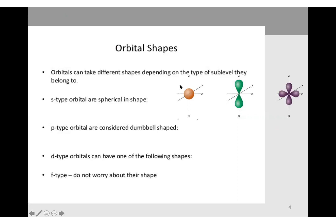These are the shapes of orbitals. Think about 3D space: the s orbital is spherical — it has x, y, and z axes and a sphere shape. The p orbital has a dumbbell shape. This is a d orbital. Just know the names and the shapes associated with each. You don't need to worry about the shape of the f orbital at this time.